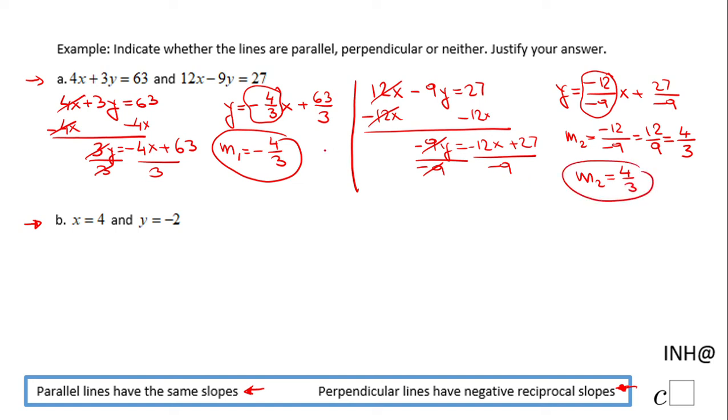So now we look into m1 and m2, these two, and we notice they are not the same, they are not negative reciprocal, so these two lines here are neither parallel nor perpendicular. They just intersect.